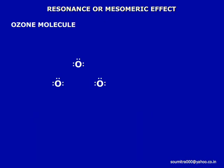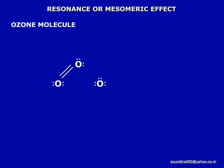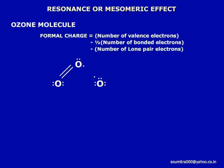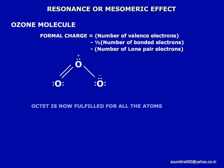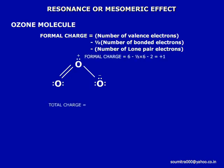Now let us distribute the valence electrons. We give a double bond here. The octet is fulfilled for these atoms. One electron goes here, resulting in a formal charge of plus 1 on the central atom and minus 1 here. Now joining this bond, the octet is now fulfilled for all the atoms and the total charge is plus 1 and minus 1, which is 0.